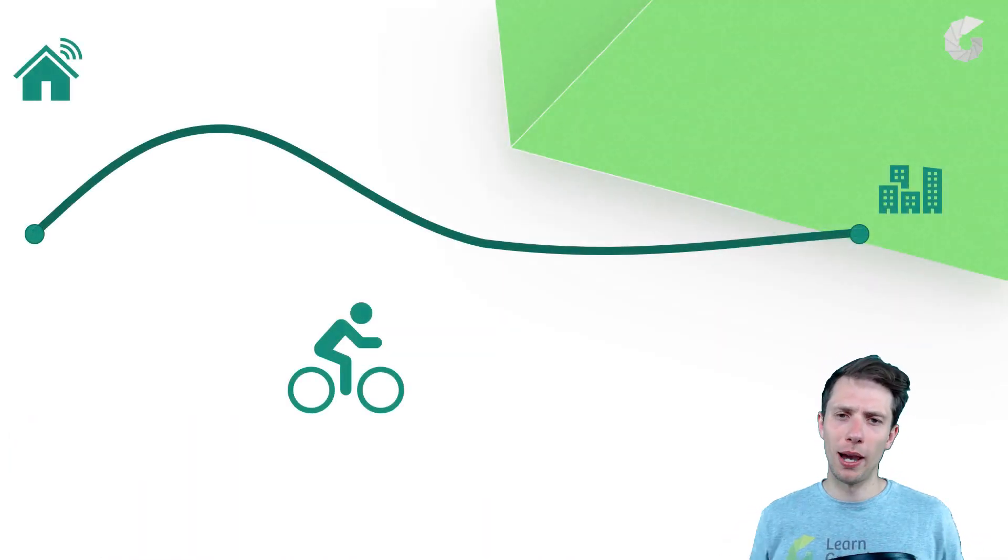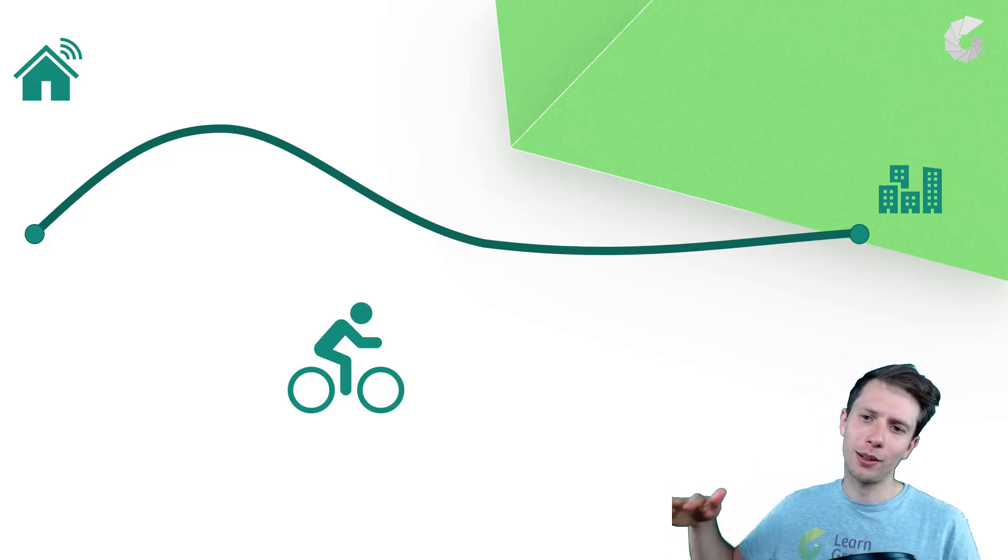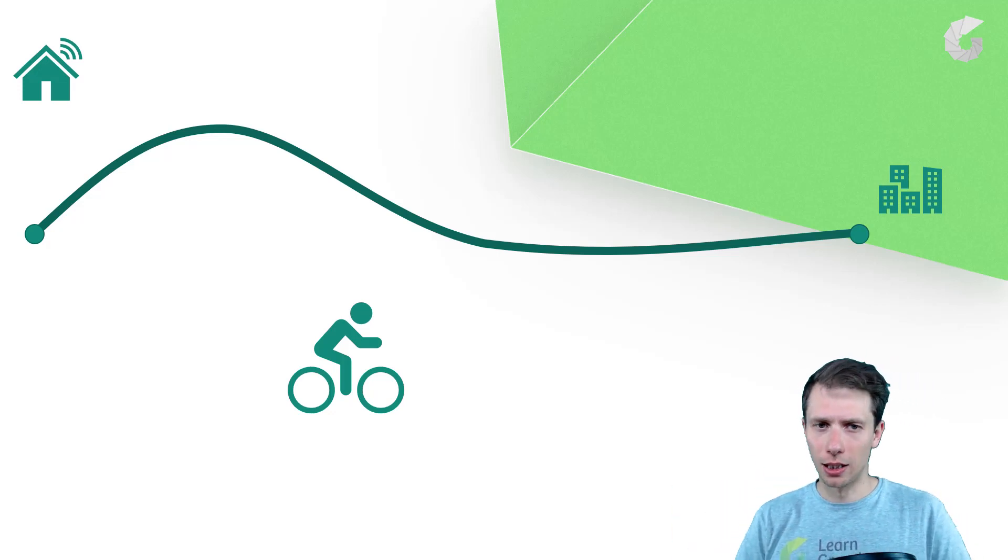Here we have a case. We have Bob on a bicycle and Bob would like to travel from his house to the city. As you can see on his road map, first he needs to go up the hill and then he rides down to the city with a slope. Bob has a watch as a true bicycle trainer and he always checks what time it is on his path to the city.